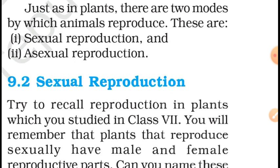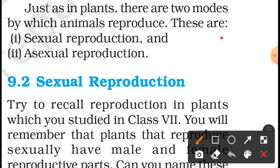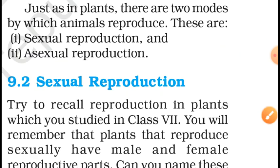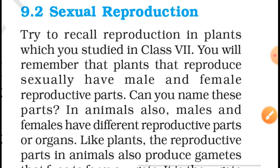Just as in plants, there are two modes by which animals reproduce. First is Sexual Reproduction and second is Asexual Reproduction. We will first learn about Sexual Reproduction.